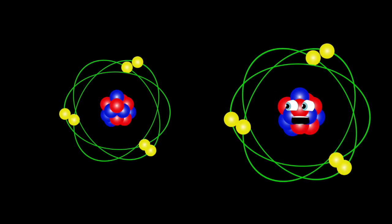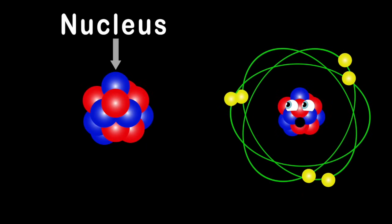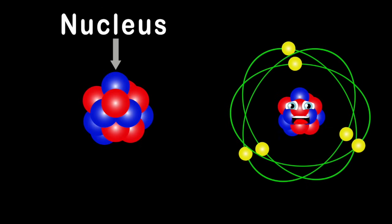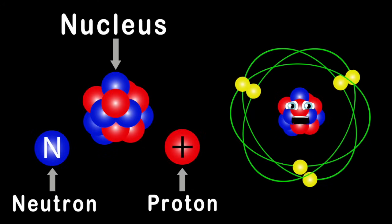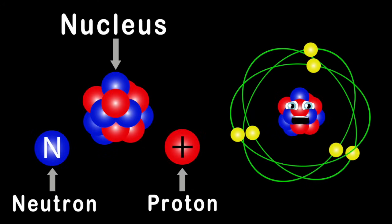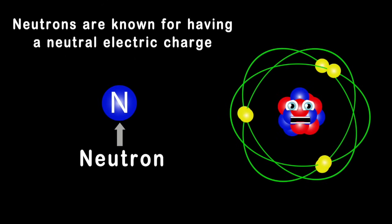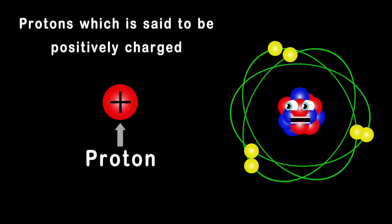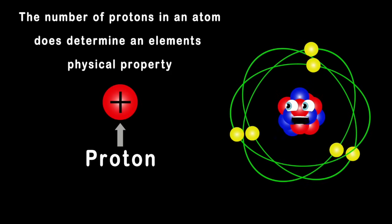What makes up an atom? Smaller particles you see. We'll start with the center called the nucleus in me. The nucleus is made up of things called neutrons and protons. Together are the dense center of an atom in this song. Neutrons are known for having a neutral electric charge, and the protons which is said to be positively charged.